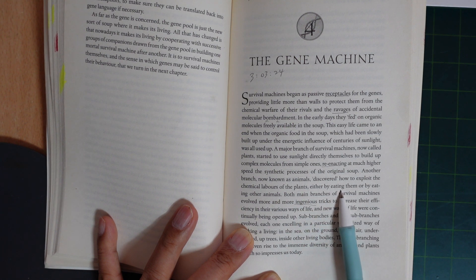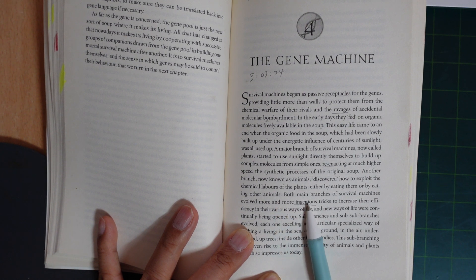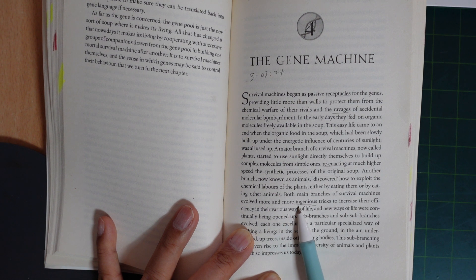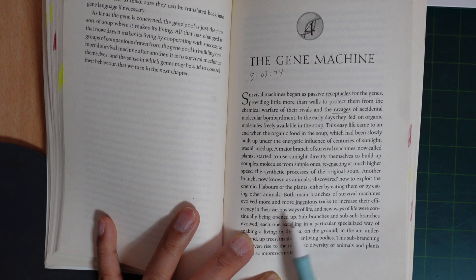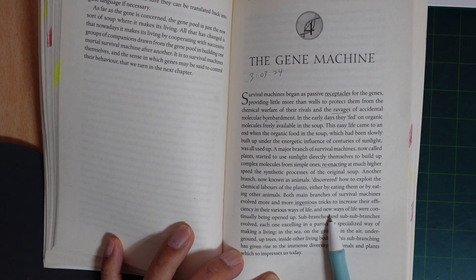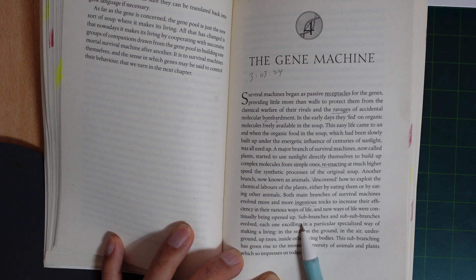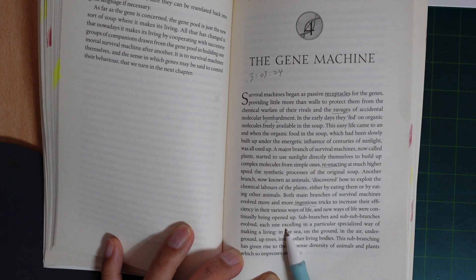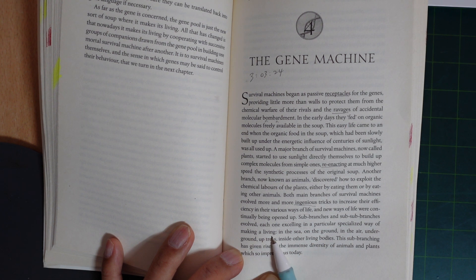Both main branches of survival machines evolved more and more ingenious tricks to increase their efficiency in their various ways of life, and new ways of life were continually being opened up. Sub-branching and sub-sub-branching evolved, each one excelling in a particular specialized way of making a living.